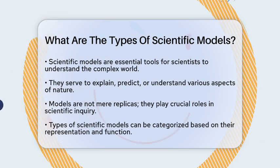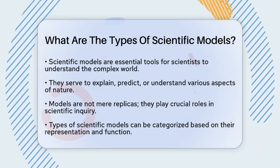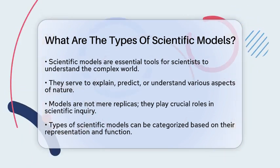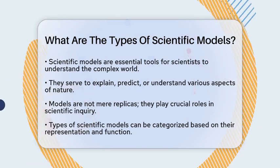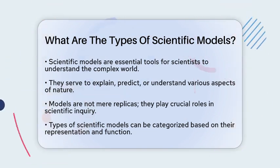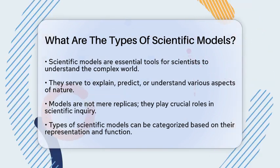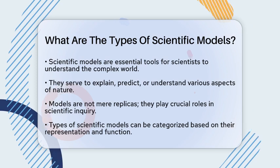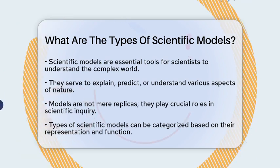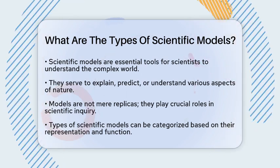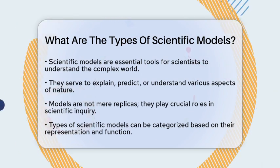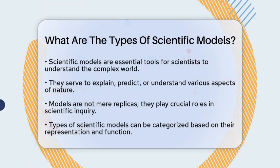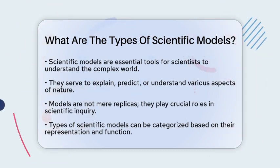Scientific models are representations that help explain, predict, or understand different aspects of the natural world. They are not just simple copies of reality. They play important roles in scientific inquiry. There are several categories of scientific models based on what they represent and how they function.